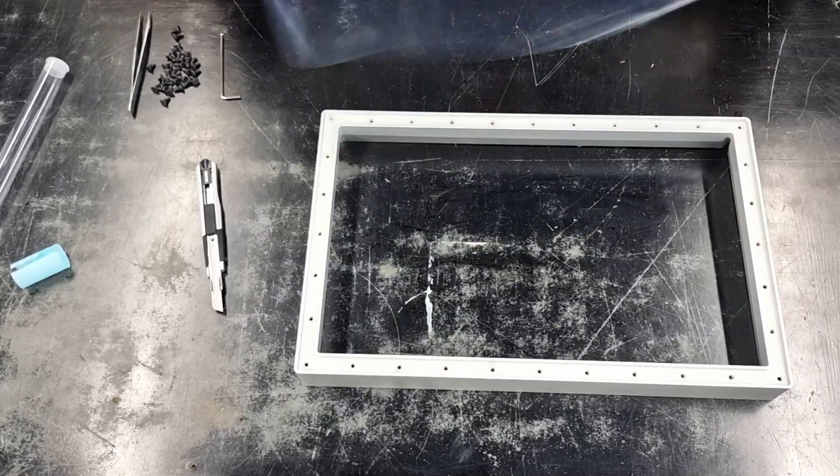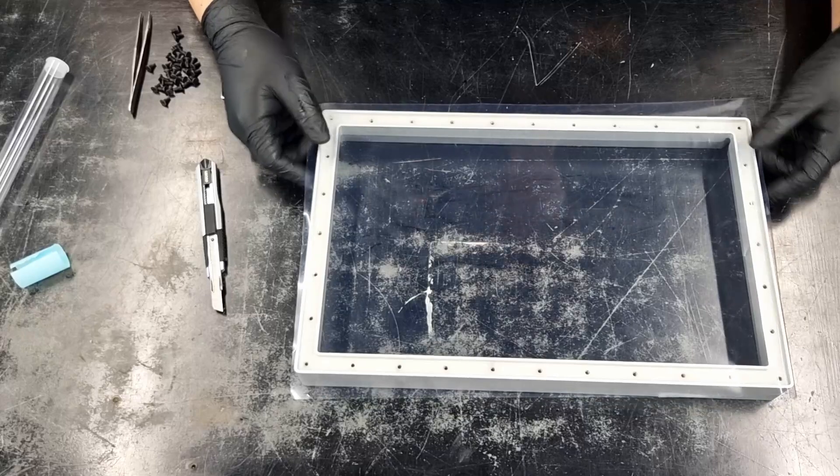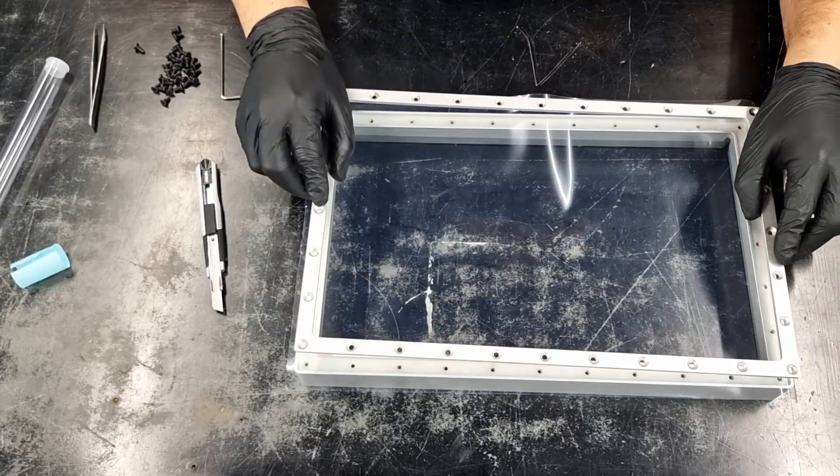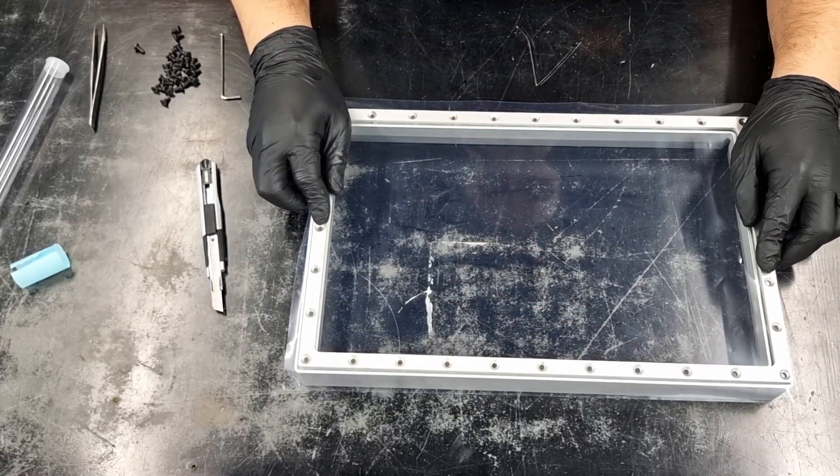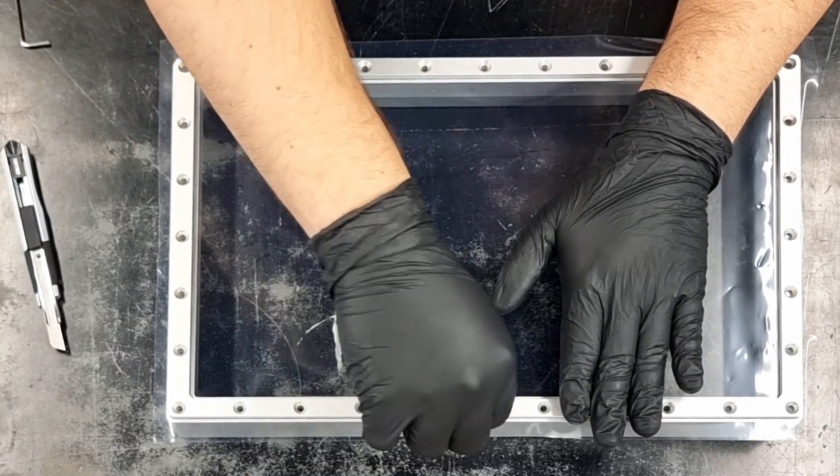Make sure that the FEP film is equally overhanging from the edges. Then place the plate on the new FEP film and pierce every hole before screwing it down.